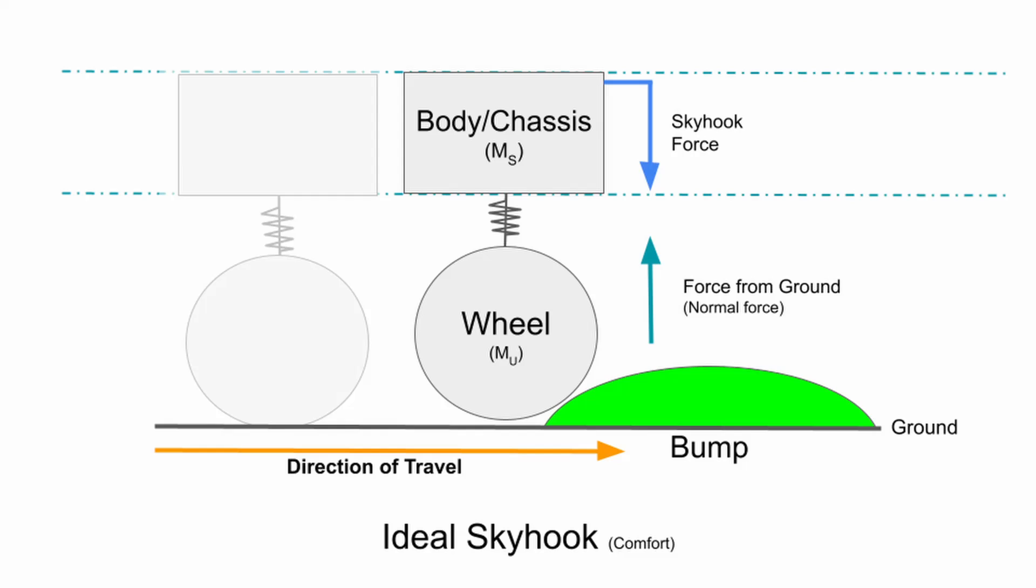I'll start with sky hook because it's easier to understand and is the basis for ground hook. This diagram depicts a single wheel of an automobile where the box is the sprung mass and the circle is the unsprung mass of the car. As the car encounters a bump, the normal force from the ground will push up on the wheel. And with a passive suspension, it's going to be the job of the spring and the damper to actually absorb this force.